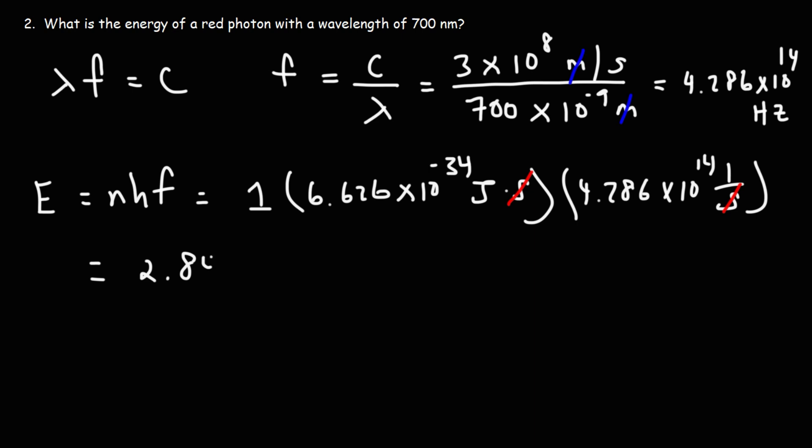So I got 2.84 times 10 to the negative 19 joules. So that is the energy of a single red photon. That's how you can calculate it.